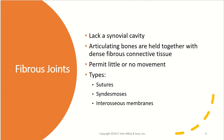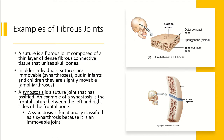Fibrous joints lack synovial cavities. The articulating bones are held together with dense fibrous connective tissue and allow very little to no movement. These include sutures, syndesmoses, and interosseous membranes. Sutures join the bones of the skull — composed of a thin layer of dense fibrous connective tissue. In older individuals, sutures are immovable synarthroses, but in infants and young children they are slightly movable amphiarthroses, which allows a baby's head to change shape during birth — that's why babies can have a cone head shape.